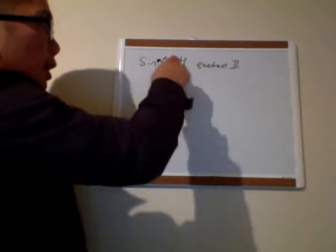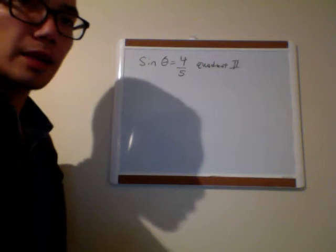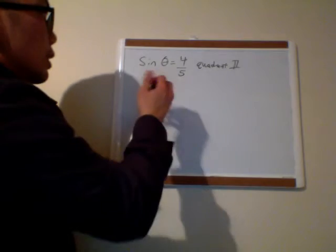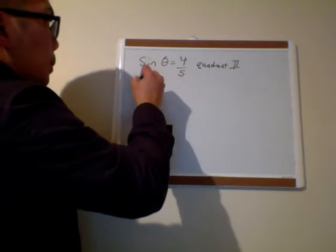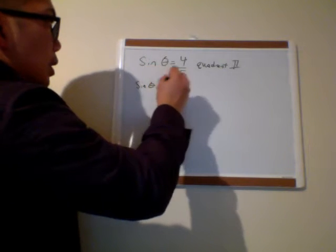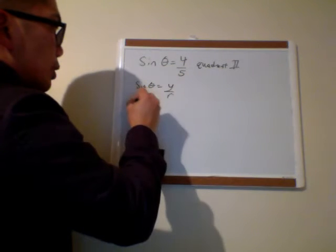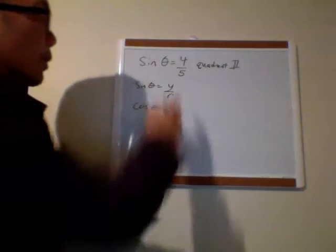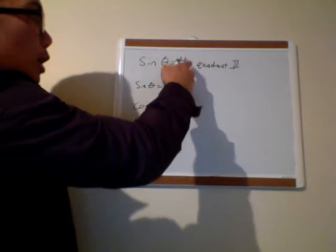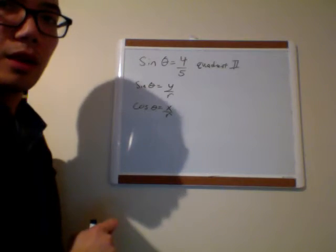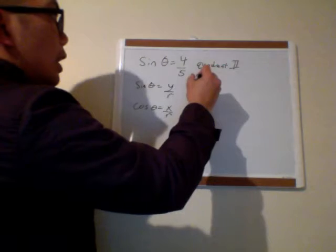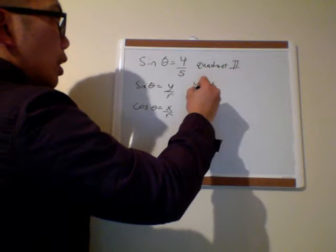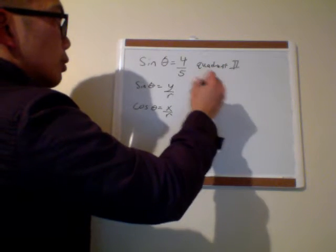Sine theta — whether it be a unit circle or not a unit circle — is really y over r, and cosine is x over r. So I know from what they give me that y is equal to 4 and r is equal to 5.